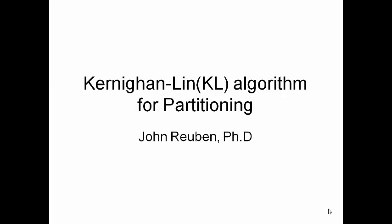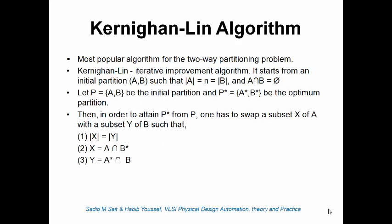In this lecture we will look at the Kernighan-Lin (KL) algorithm for partitioning. The KL algorithm is perhaps the most popular algorithm for two-way partitioning. It is an iterative improvement algorithm. Given an initial partition AB, the problem is to find a new partition A*, B* such that the number of nets cut across the partition is minimized.